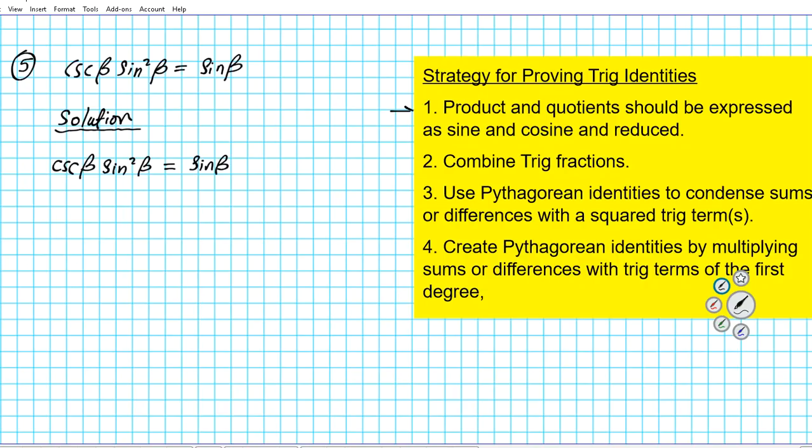Notice in number one, if we have the product and quotient, it's beneficial to write them using sine and cosine and reduce. That's the main purpose of writing the trig functions in terms of sine and cosine only, because it enables you to see common factors that can be divided out so you can reduce the problem.